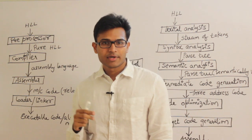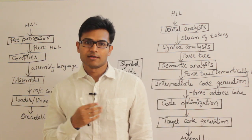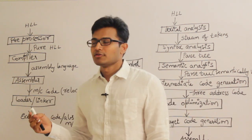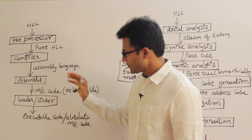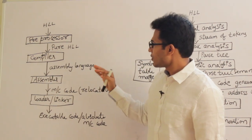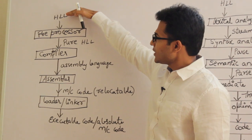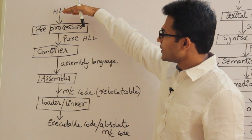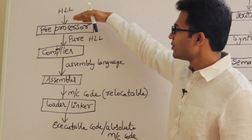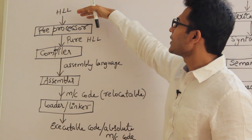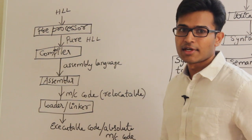Along with the compiler we have many other software modules which will help us. If you look at this diagram, I'll tell you what phases are available. First, the high-level language will be given to the pre-processor. Then the pre-processor is going to convert that high-level language into pure high-level language.